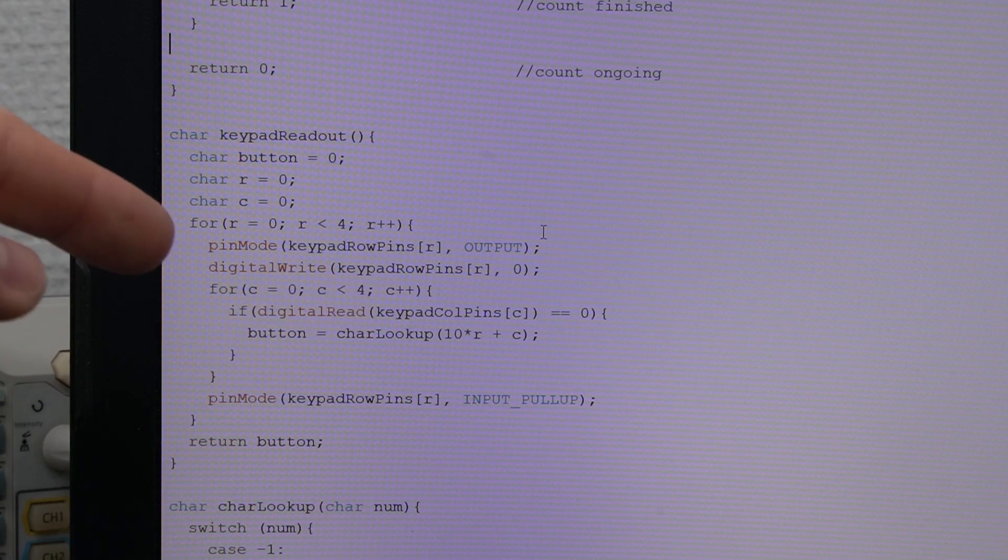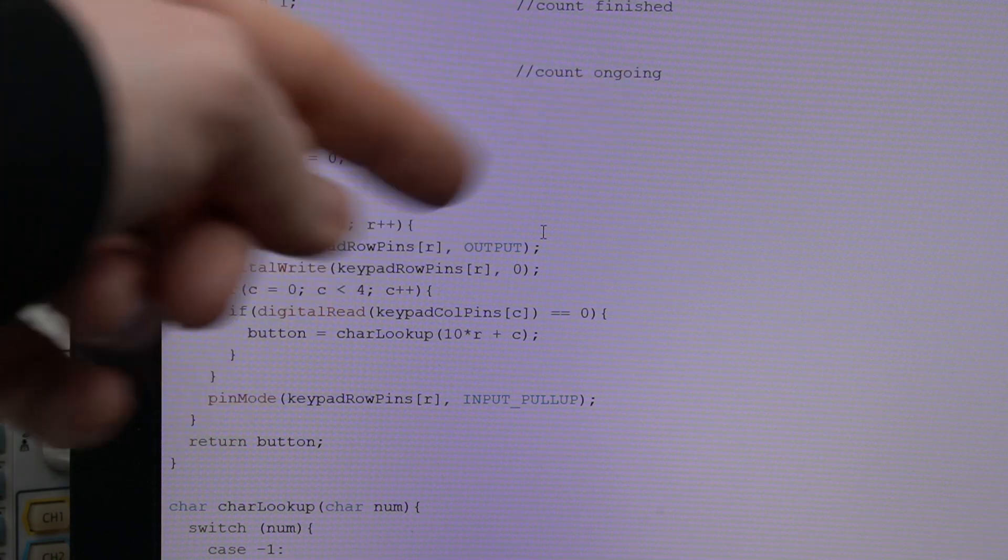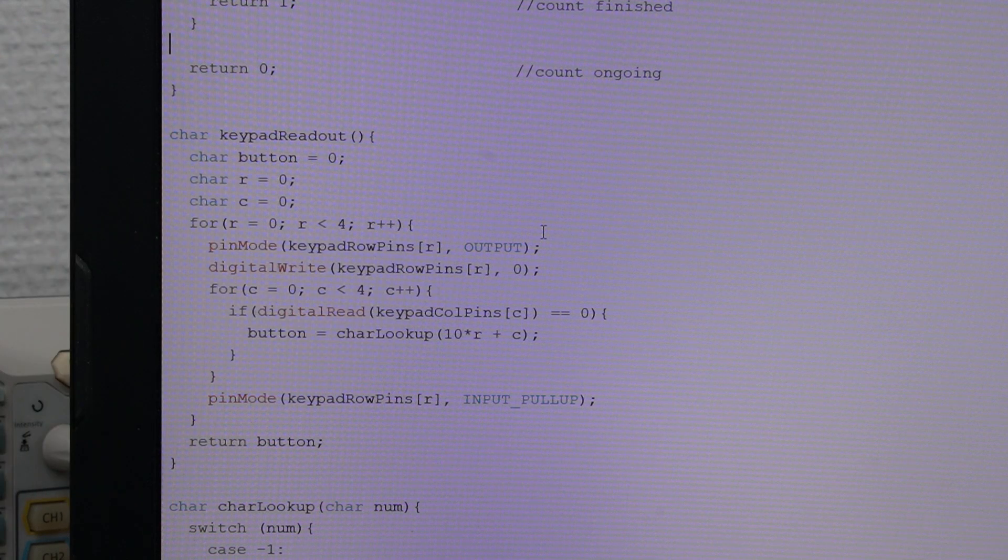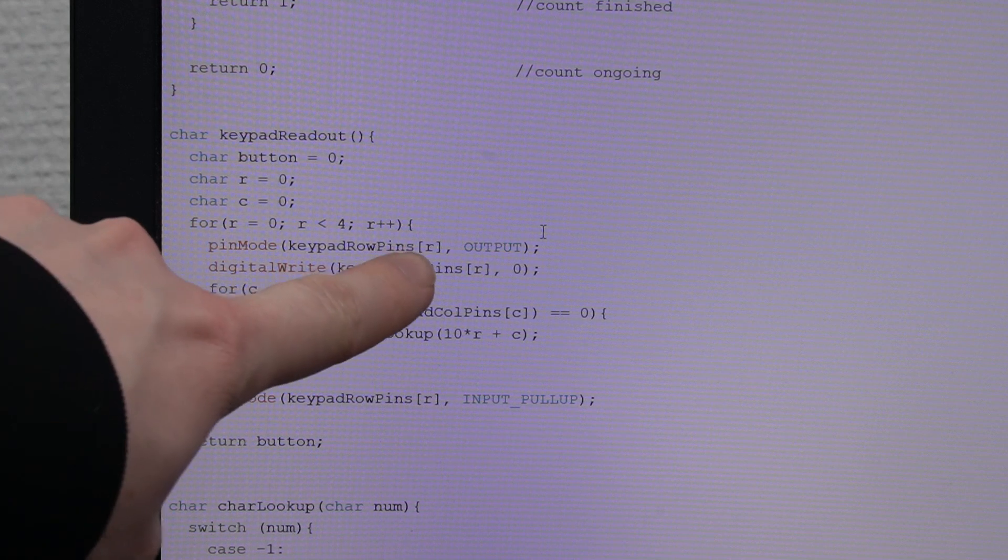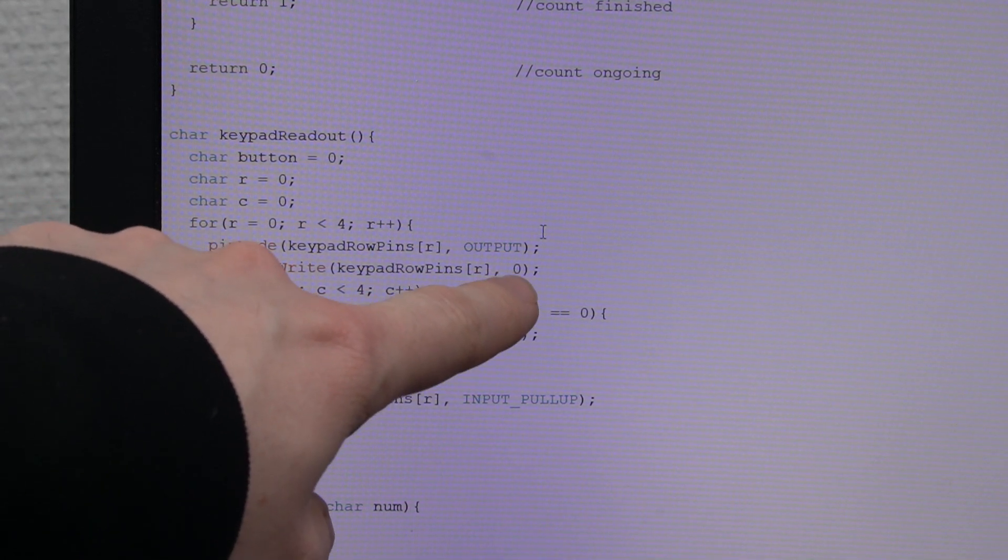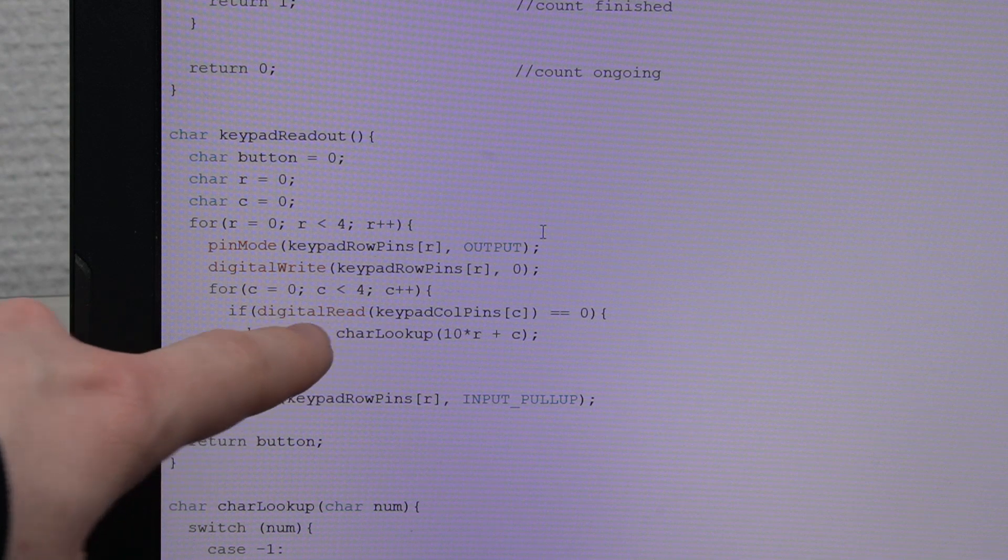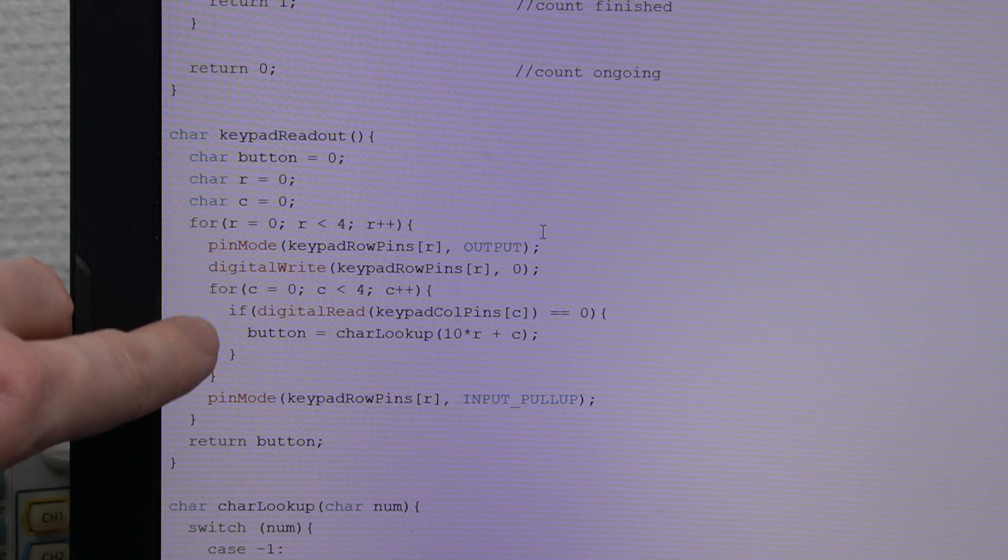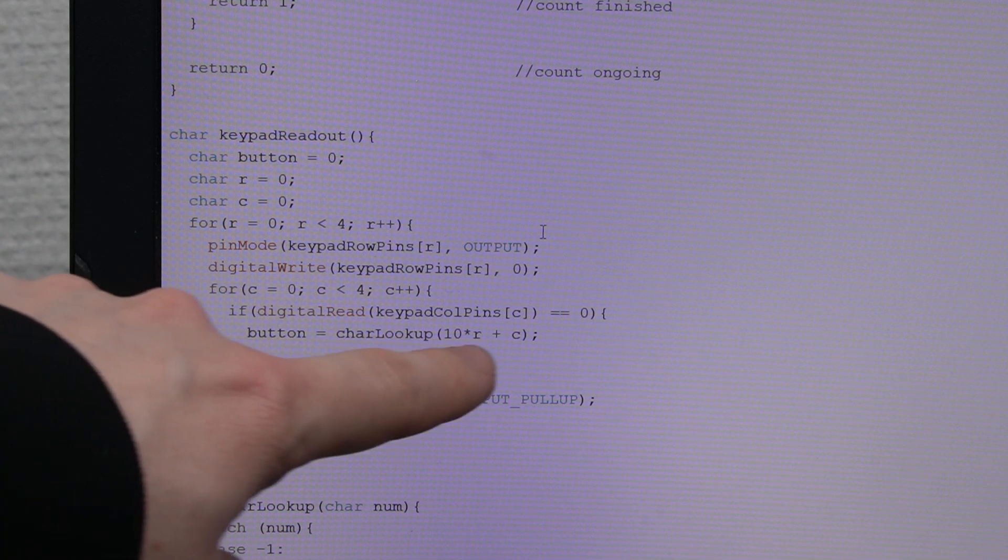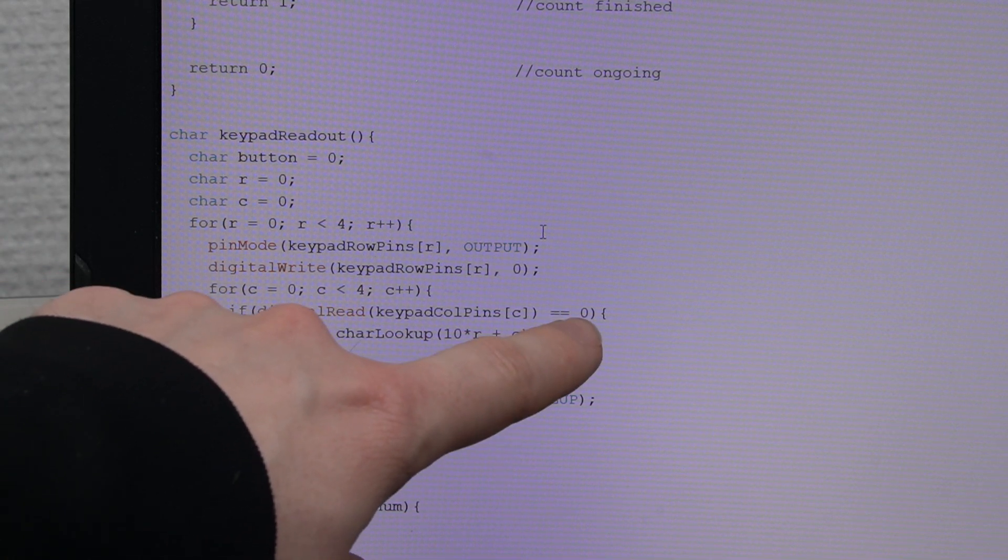Then as we discussed, I simply just run through the rows. And then I read on the column pins. I change the particular row pin to an output and I put it low. I could have written low here, but I was lazy. I put a zero. So it's the same thing. And then I run through all the column pins and I see if any of them are low,